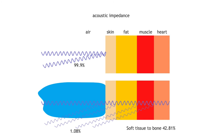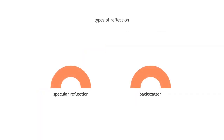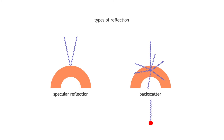Different types of reflection help form the ultrasound image. Specular reflection — think mirror-like — occurs at large smooth surfaces such as heart valves and the heart wall surface. Backscatter occurs at small rough surfaces such as the myocardium, scattering in all directions. A particular type of backscatter from very small structures like red blood cells is Rayleigh scatter, which occurs equally in all directions.